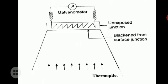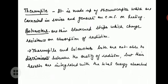Here is the figure showing a thermopile. Bolometers are thin blackened strips which change resistance on absorption of radiation. Both thermopile and bolometer are not able to discriminate between the quality of radiation; the results are integrated with the total energy absorbed.